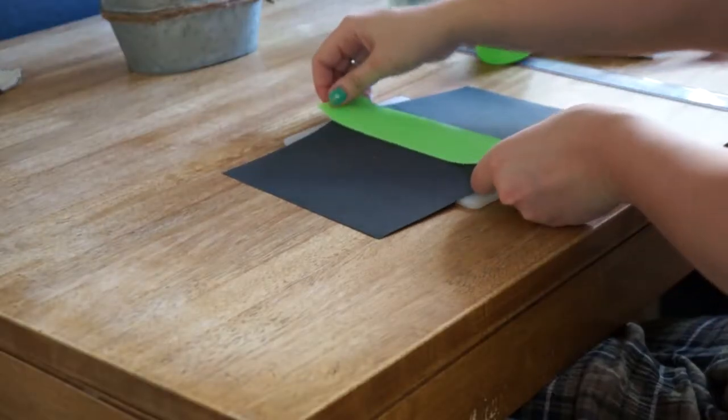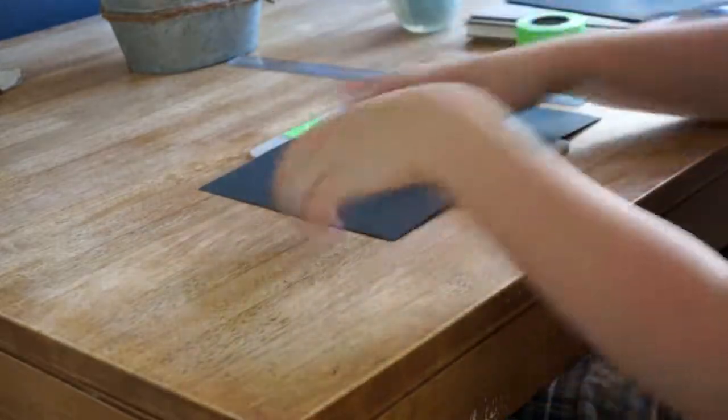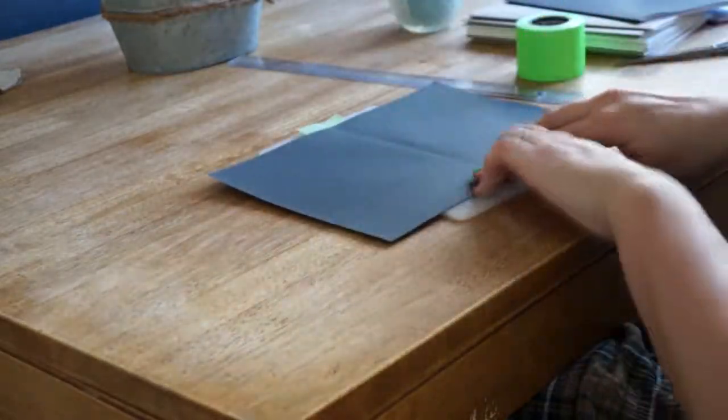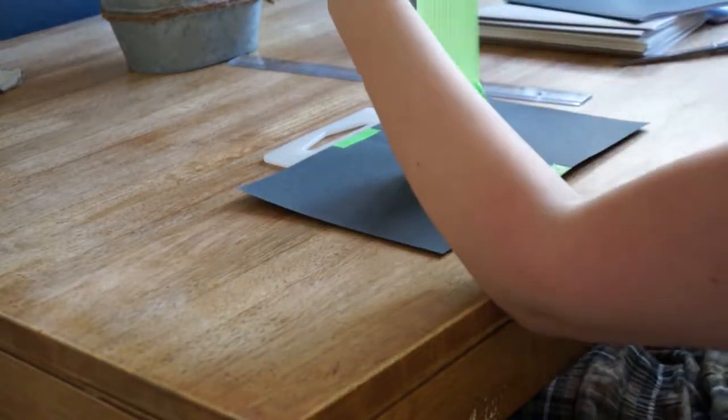I started by folding all of my papers and then adding a strip of duct tape to both sides of the outer pages of each signature. A signature is a pile of paper, and each signature consists of 4 papers.